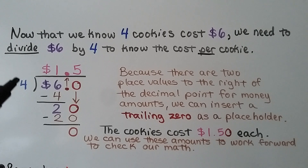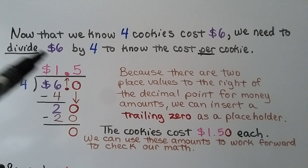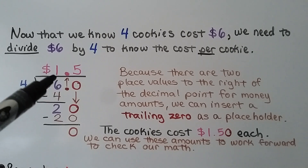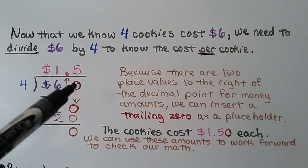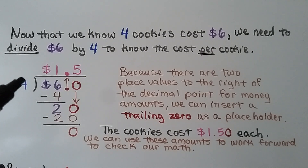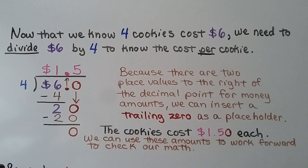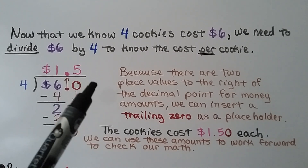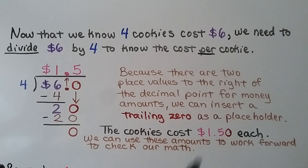$6.00 divided by 4: 4 fits into 6 one time. We put a 1, and 4 times 1 is 4. We subtract and get 2. We add a decimal point and a 0 to continue dividing. We drop down the 0 and 4 fits into 20 five times. 4 times 5 is 20; we subtract and get 0. Since money amounts have two decimal places, we insert a trailing zero as a placeholder. The cookies cost $1.50 each.